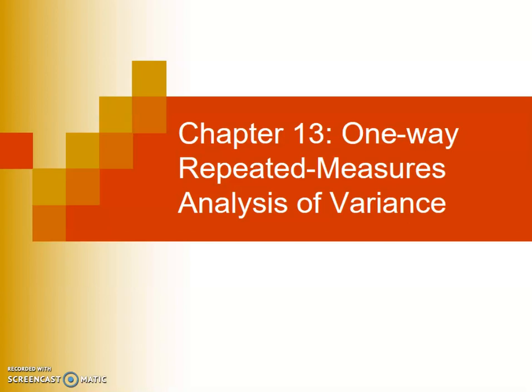Chapter 13 - we're going to be talking about the One-Way Repeated Measures Analysis of Variance, or ANOVA for short. Chapter 13 is very similar to Chapter 12. The major difference between this chapter and the last is that we're dealing with a different type of research design. Chapter 12 dealt with the one-way independent samples ANOVA, and this one deals with one-way repeated measures, or sometimes called within-subjects, ANOVA.